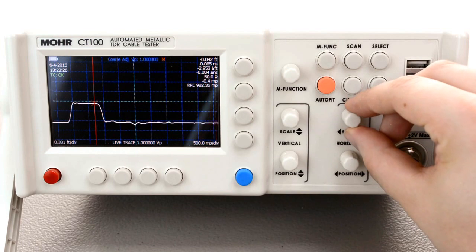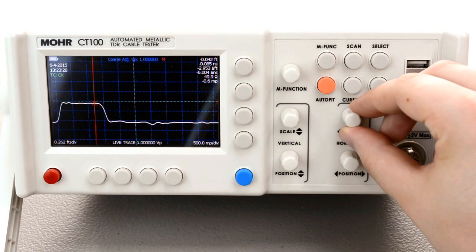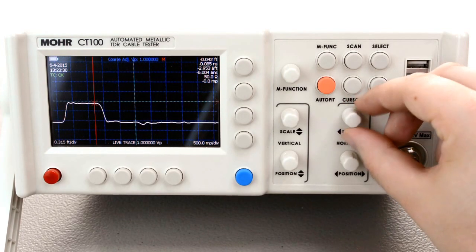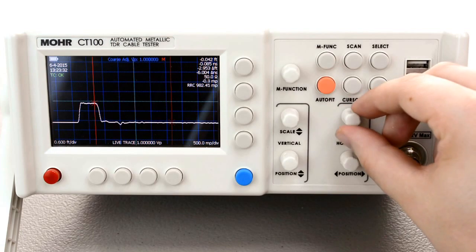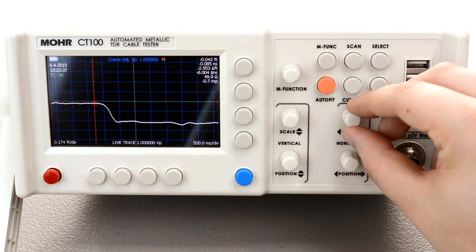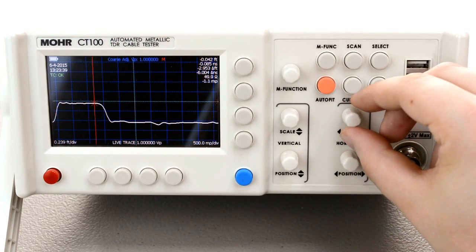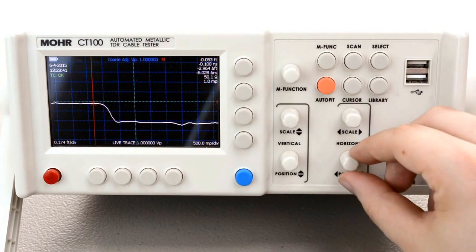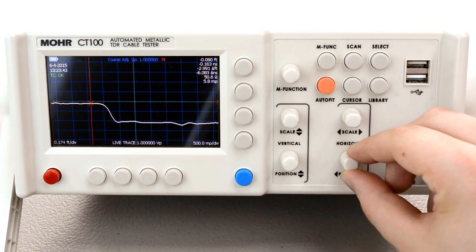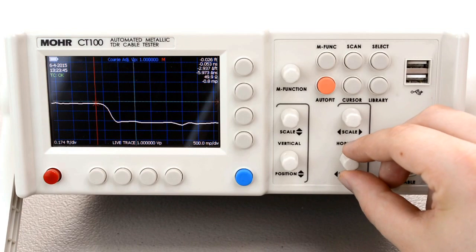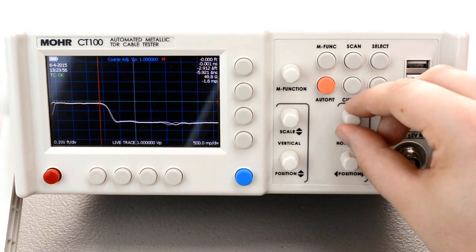This is horizontal scale. It allows you to zoom in horizontally and zoom out horizontally. By increasing the horizontal scale you can get much closer to precise cursor positions. There it's at zero feet.